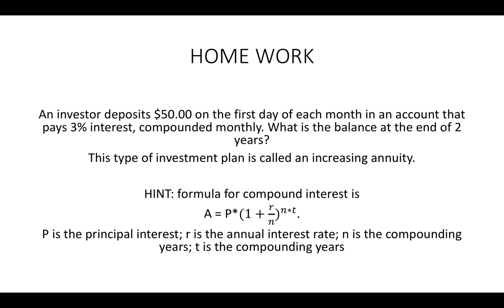Formula for compound interest is given: A = P*(1 + r/n)^(n*t). P is the principal interest, r is the annual interest rate, n is the compounding years, and t is the compounding years. I think they made a mistake there, but I'm gonna show you my attempt at a solution. I do believe it's correct. Let me know by leaving a comment.